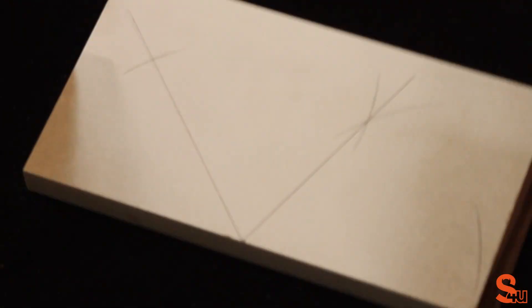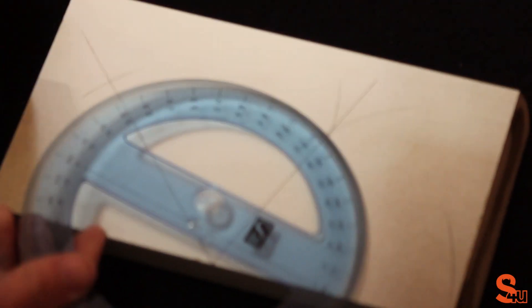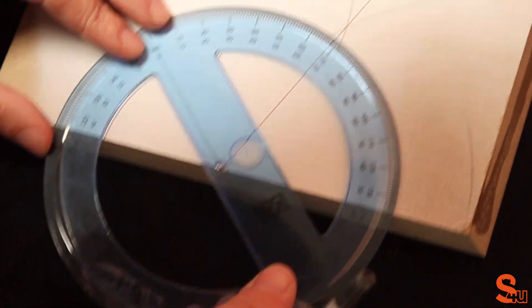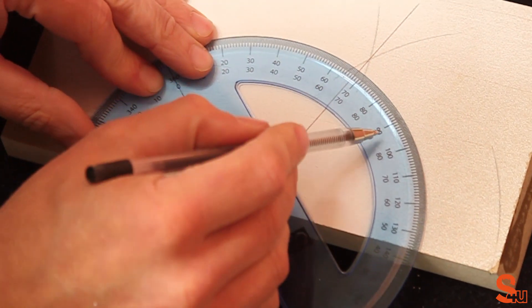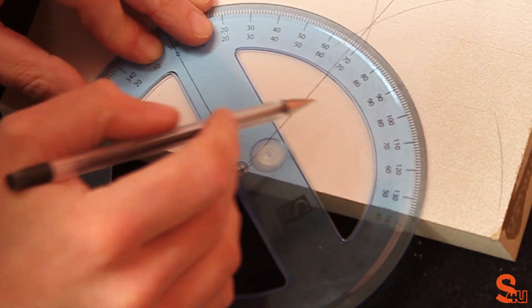From here, grab a protractor and run it across the line. We take the difference from 90 degrees.